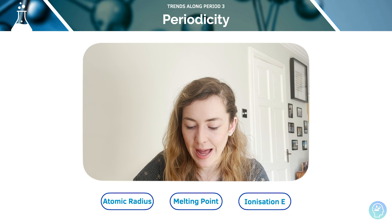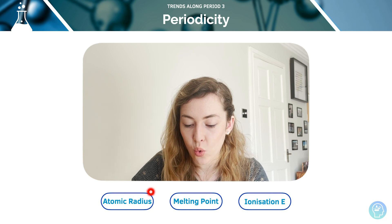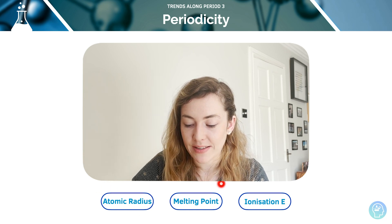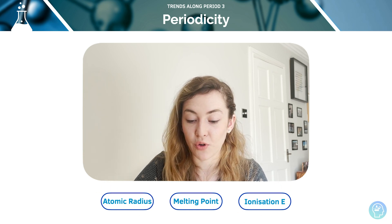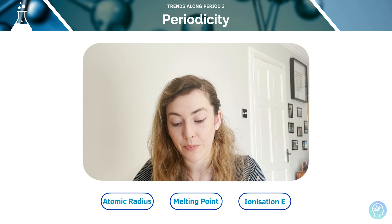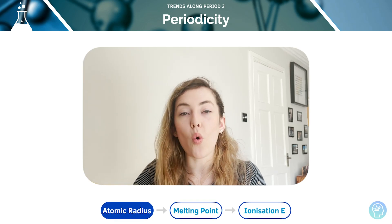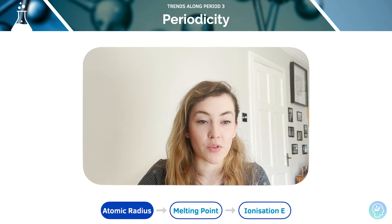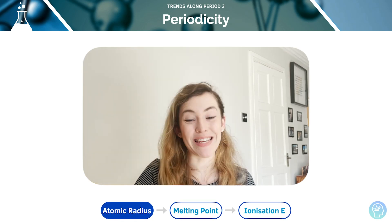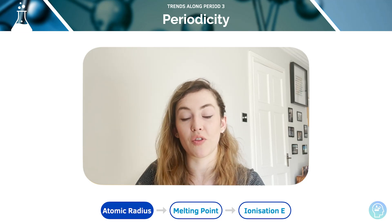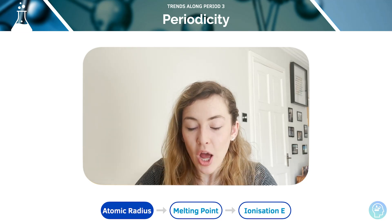Let's have a quick recap. We're going to talk about melting point, atomic radius and ionisation energies and proton number as well. The atomic radius of an element decreases as you move across the period.